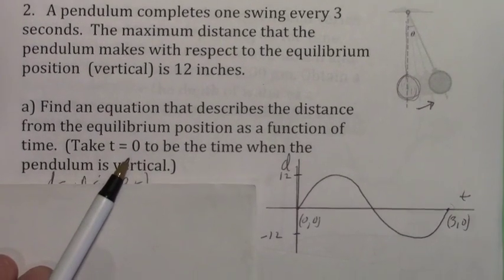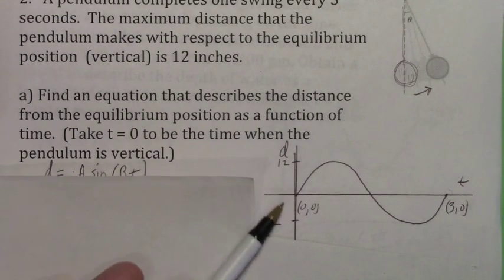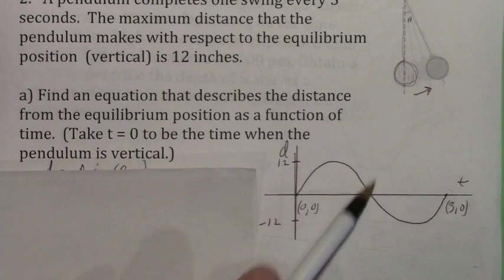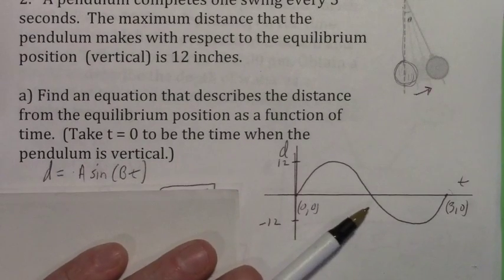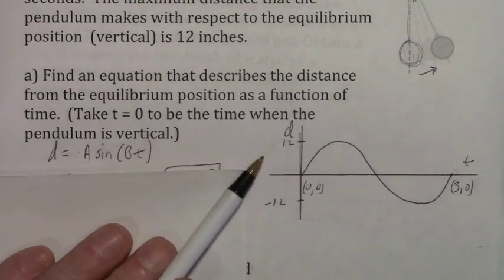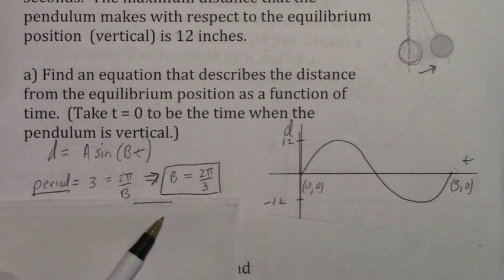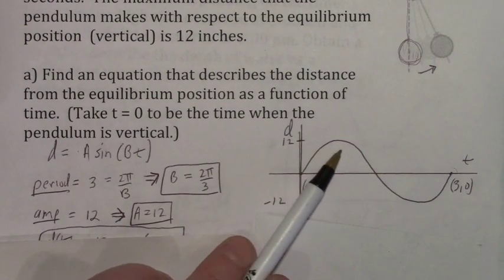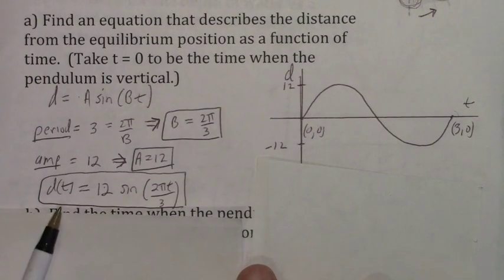Since t equals 0 is when the pendulum is at the vertical position, it starts in the middle of the graph, which suggests a sine function. It goes 12 inches to the right, back to the middle, then 12 inches to the left (negative 12), then back to the middle. The period is 3 seconds, so 3 equals 2 pi over b, giving b equals 2 pi over 3. The amplitude is 12. Since the graph starts at 0 and goes up, a is positive 12. The equation is d equals 12 sine(2pi/3 · t).